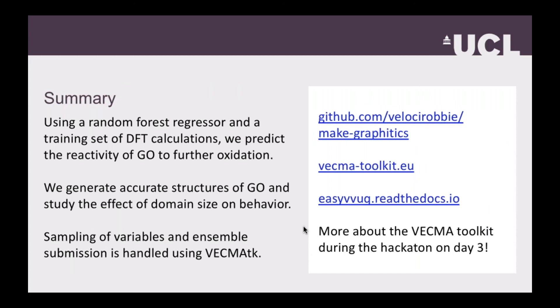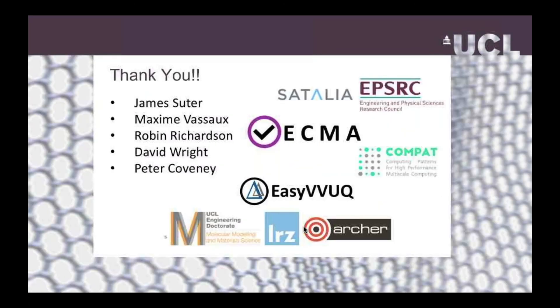In summary, I've shown how we can predict and interpolate graphene oxide reactivity using a random forest regressor based on DFT calculations, and how that accurate graphene oxide structure is important for many of these applications. With that, I'd like to thank my collaborators and all of you here for listening.